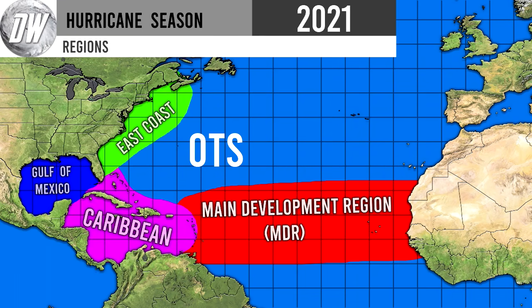First things first, I need to educate everybody on all the different regions I will be talking about within this video. We have our red region — the main development region, or what we commonly call the MDR. This is where most tropical systems begin, near the coast of Africa, working their way westward towards the Caribbean, which is our purple region. From there, they can go to basically three different places: the Gulf of Mexico, out to sea (OTS for short), or up the East Coast — and everywhere in between is also a possibility.